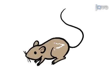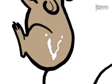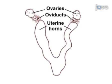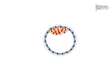The overall goal of this procedure is to derive TS cells from mouse blastocysts. This is accomplished by first isolating the uterine horns and recovering blastocysts from pregnant mice.